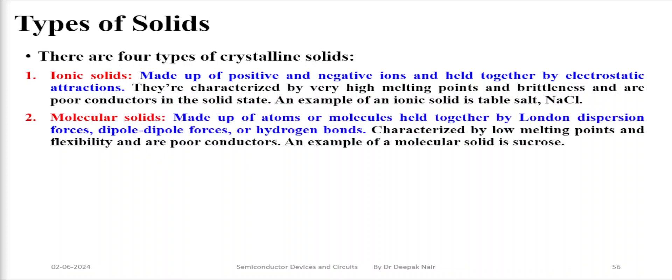The second type of solids are molecular solids. These are made up of molecules held together by London dispersion forces, dipole-to-dipole forces, or hydrogen bonds. They generally have very low melting points, very high flexibility, and are also very poor conductors. An example of such a molecular solid is sucrose.